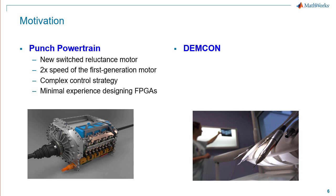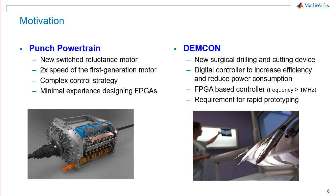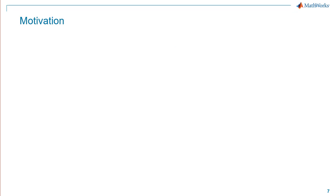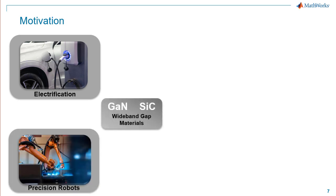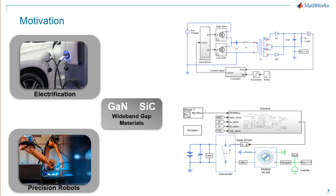The challenge was that they had minimal FPGA knowledge within their organization. At Demcon, engineers were asked to create a surgical drilling and cutting device with significant improvements in efficiency and power consumption. With numerous inputs and outputs to the controller and the running frequency at 1 MHz, they decided to use an FPGA-based controller. Their challenge was to get prototypes out in the field to get direct feedback from surgeons regarding the performance of the device. Control engineers are facing rapid growth in electrification, adoption of wide bandgap materials, use of precision robots and efficiency improvements to develop highly complex, fast-switching, compute-heavy digital control systems.